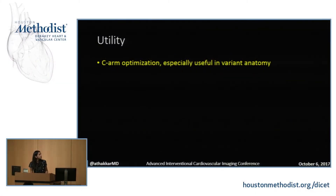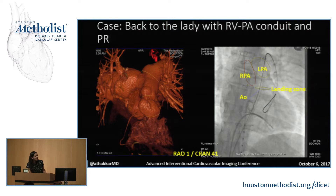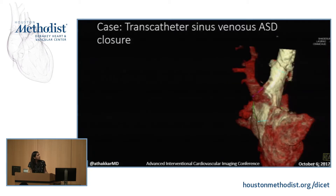Image fusion allows us to optimize C-ARM angles. Once the image fusion is performed, we can rotate the CT data set, and if I'm looking at the anatomy in a given orientation, it tells me the corresponding C-ARM angle — for example, RA 0, cranial 41 — so I can set my C-ARM to that angle and know exactly what orientation I'm looking at the anatomy in. It also provides intraprocedural guidance and a roadmap for device deployment.